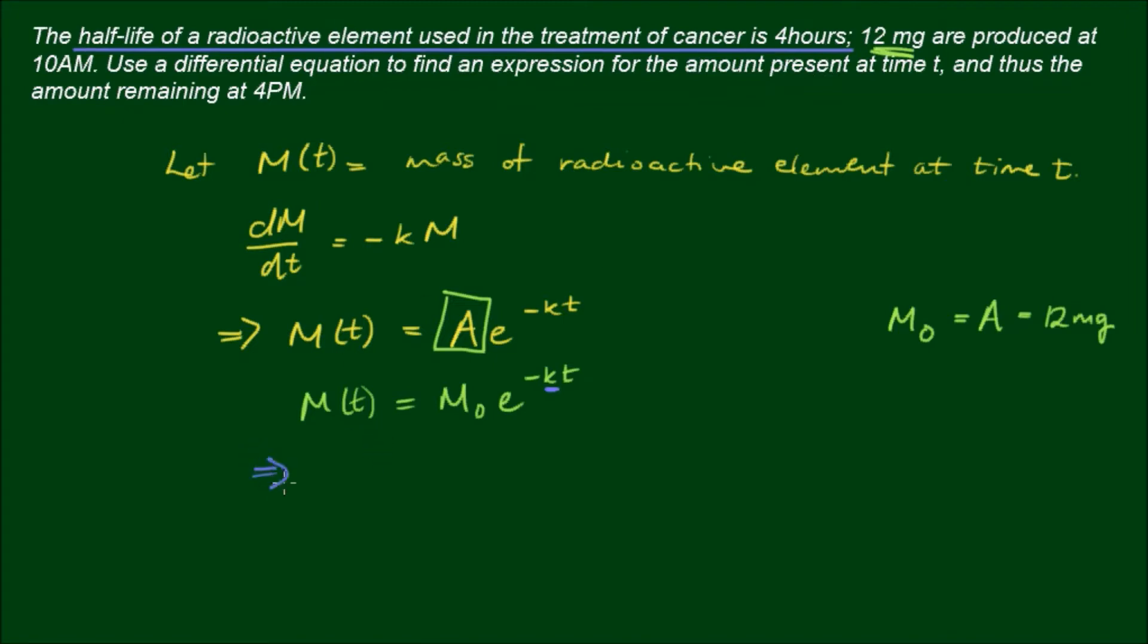So what this means is when t equals 4, at 4 hours, the mass that's remaining is equal to half of M₀. So the mass of the radioactive element remaining at 4 hours equals half of M₀. And that's of course equal to M₀ times e^(-4k).